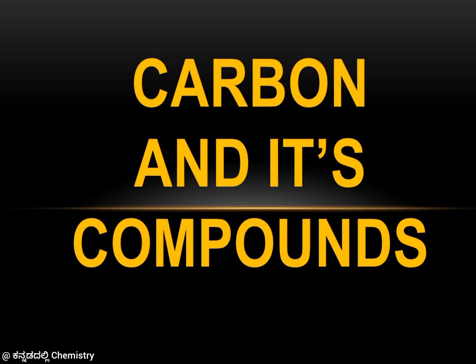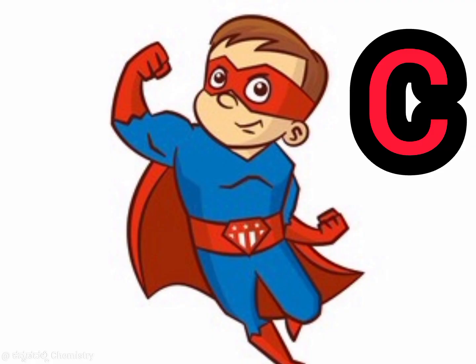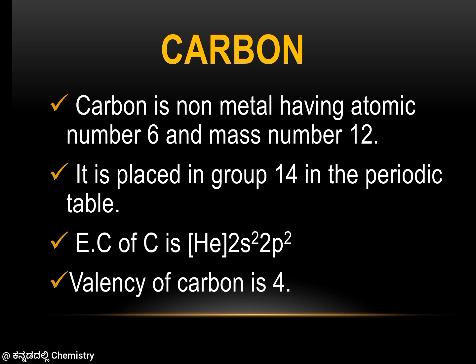Carbon is called the Super Hero of Organic Chemistry. Carbon has atomic number 6 and mass number 12. It is placed in the 14th group of the periodic table. The electronic configuration of carbon is 1s² 2s² 2p², and the valency of carbon is 4.